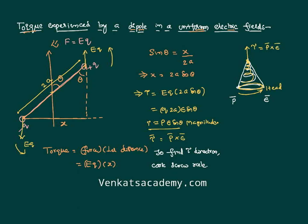For E⃗ × p⃗, we rotate the head in the opposite direction, and the tip of the nail moves downward — equal in magnitude but opposite in direction. This is why the cross product of vectors does not obey the commutative law.